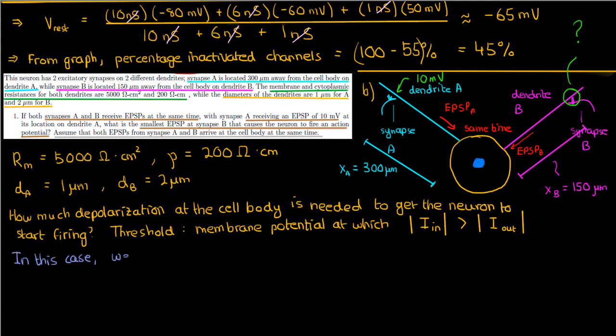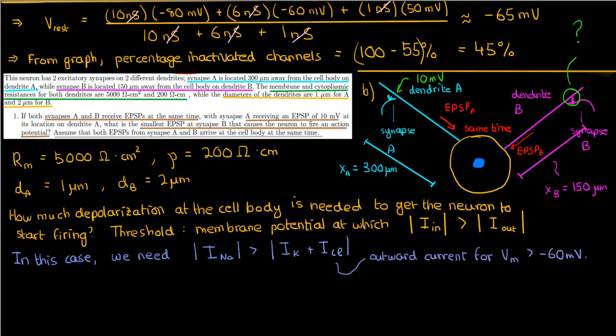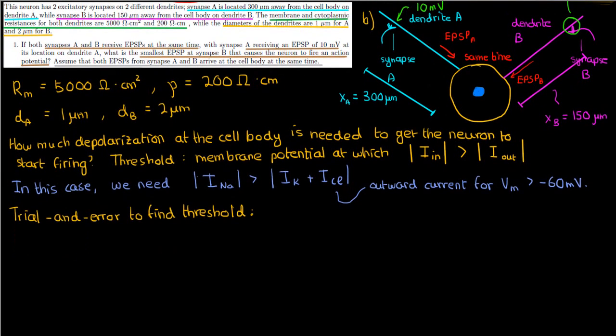The inward currents are sodium currents and the outward currents are potassium and chloride currents. Chloride is actually an inward current below negative 60 millivolts, but when finding threshold we're looking at voltages above negative 60 millivolts where chloride will be an outward current. Since graphs are our main information, we use a trial and error method. Let's guess a threshold of minus 45 millivolts.